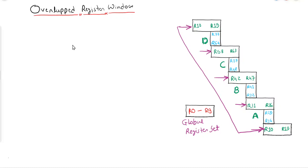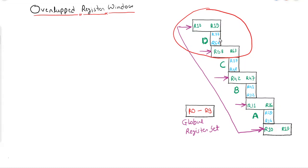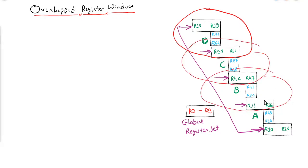This is the idea behind the overlap register window. If we try to calculate the window size, the entire arrangement is known as the register file, and the arrangement of two shared register sets and one individual local set is known as a window. We can identify a first window, a second window, a third window, and a fourth window.